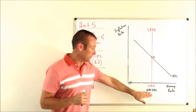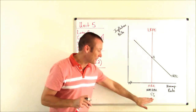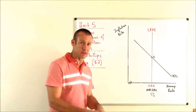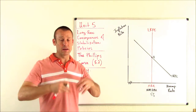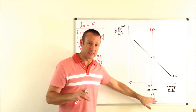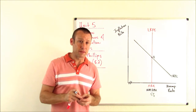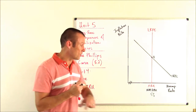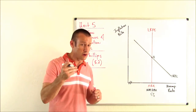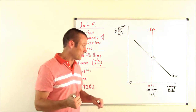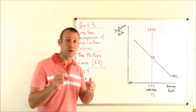Let's do an example. Imagine the true NRU is 5%, but nobody sets that — it's not a policy decision. It's based on the structure of the economy and has to essentially be discovered. Now suppose the Fed doesn't know the NAIRU is 5% and thinks it's actually 4%. The NRU and NAIRU being the same, the Fed believes both are at 4%.